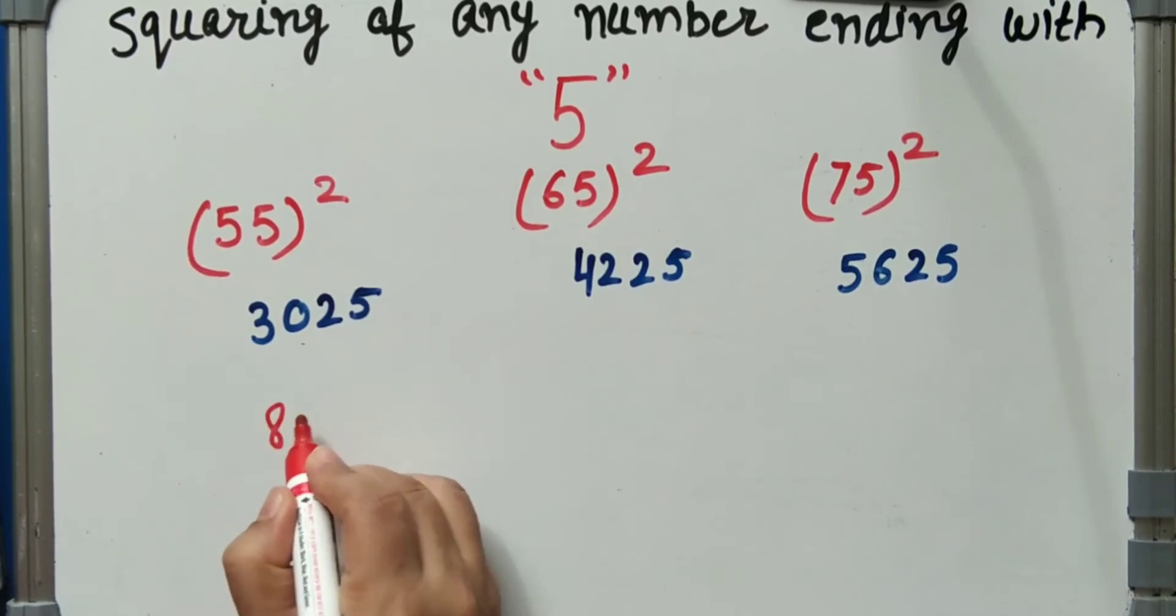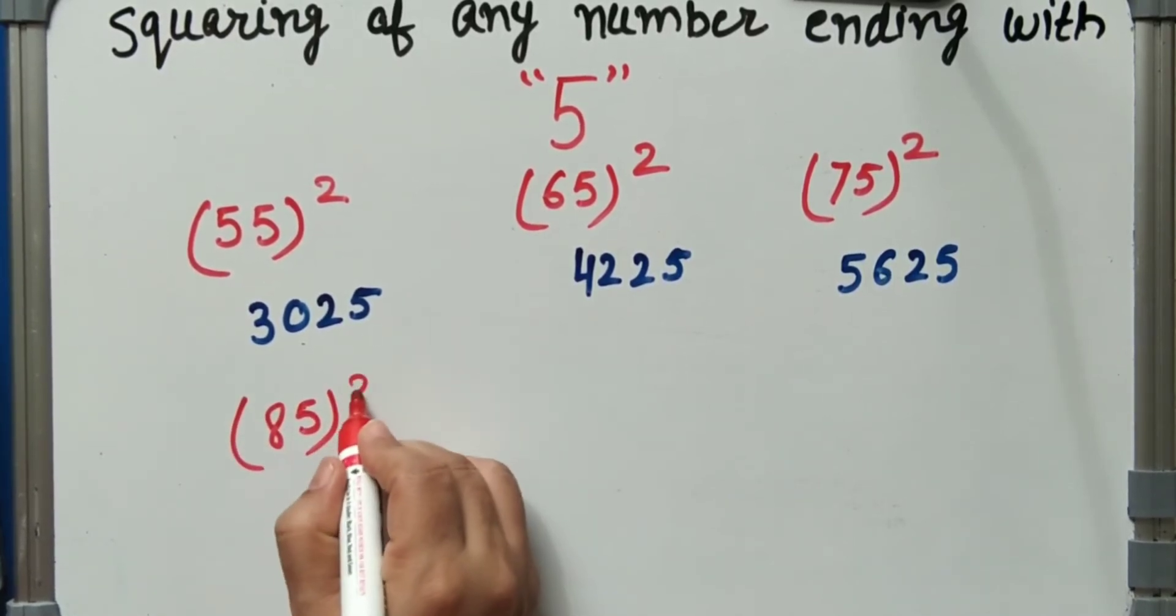85 square: that is 25, 8 into 9, 72, 25.